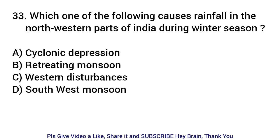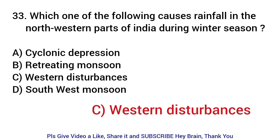Which one of the following causes rainfall in the northwestern parts of India during the winter season? Answer: Western disturbances.